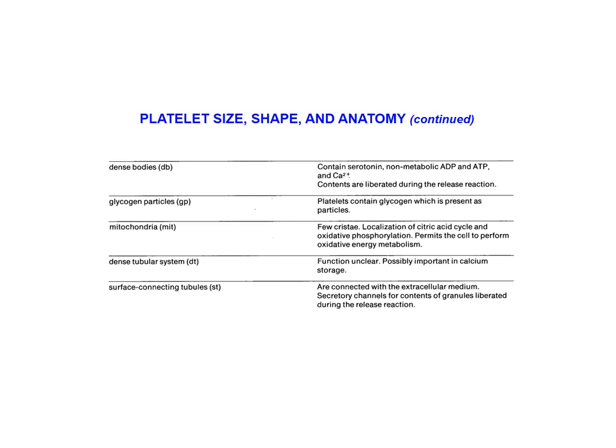Continuing the list of the anatomy of platelets, some other compartments inside the cytoskeleton are known as dense bodies. These contain different chemicals compared to the alpha granules — specifically serotonin, ADP, and calcium ions. The cells also have mitochondria and that extension of the outside membrane inside the cytoplasm, now known as surface-connecting tubules. These become the channels for the release of chemical compounds from the granules in the cytoplasm when the platelets are activated.